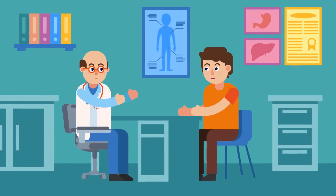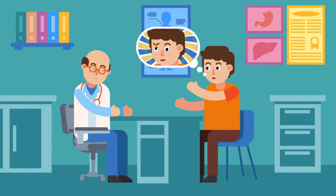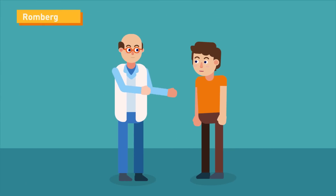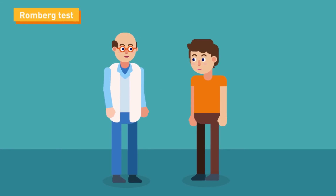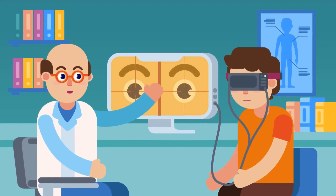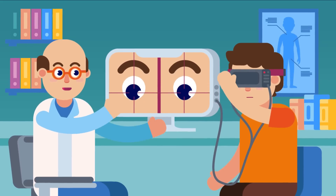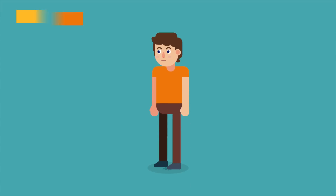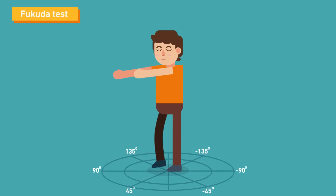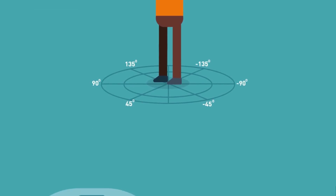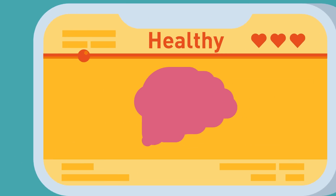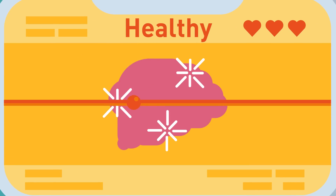How to diagnose vertigo: Vertigo can be diagnosed based on clinical history and symptoms reported by the patient, blood tests to check for infection, the Romberg test where the patient stands with eyes open and feet together then maintains balance with eyes closed, vestibular testing to check for involuntary eye movements such as nystagmus, and the Fukuda-Unterberger test where the patient closes their eyes and marches in place. Doctors may also require CT scan or MRI to rule out central causes or tumor presence.